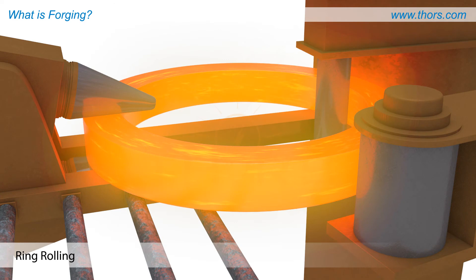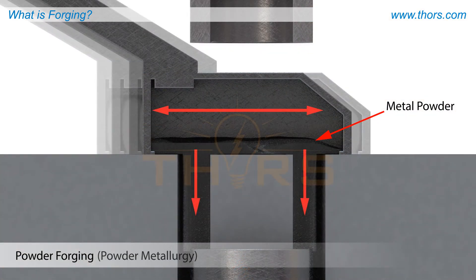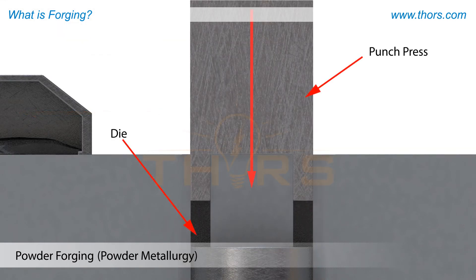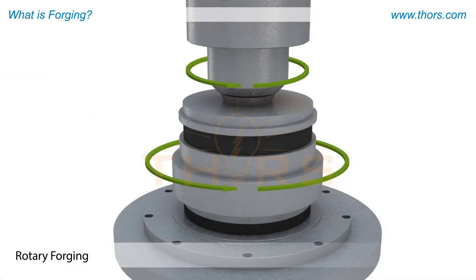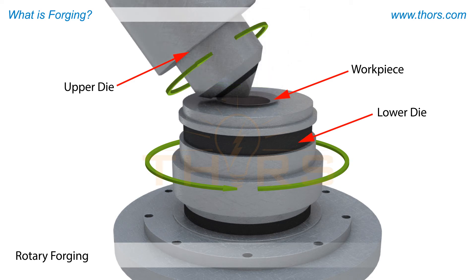Powder forging, also known as powder metallurgy, involves the confined forging of metal powders in a die. Rotary forging uses a two-die process to forge a piece continuously; the rotation between the dies eventually deforms the piece until its figure or shape is completed.